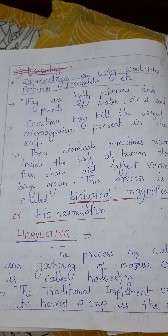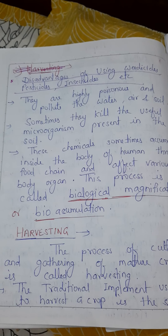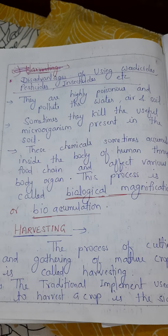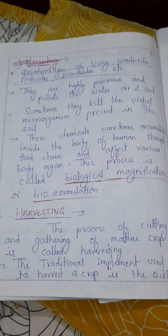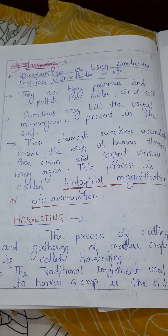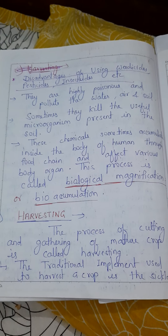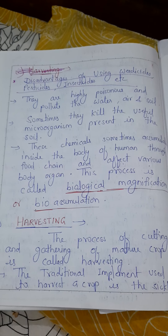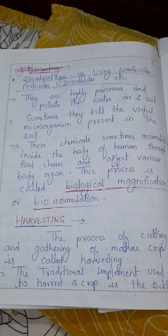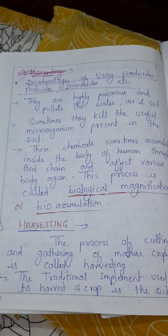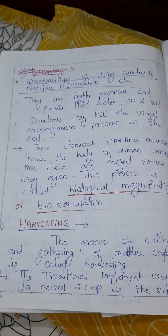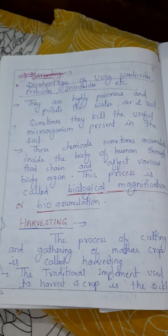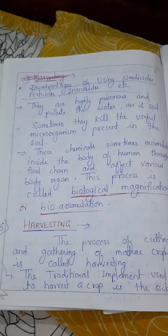The next topic is harvesting. Harvesting means the process of cutting and gathering of mature crops. The traditional implement used for harvesting the crop is the sickle. Thank you, students.